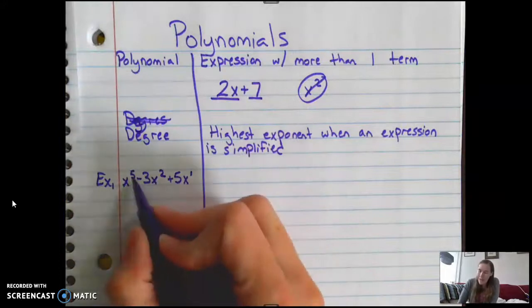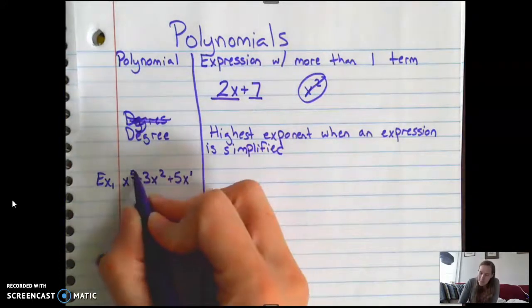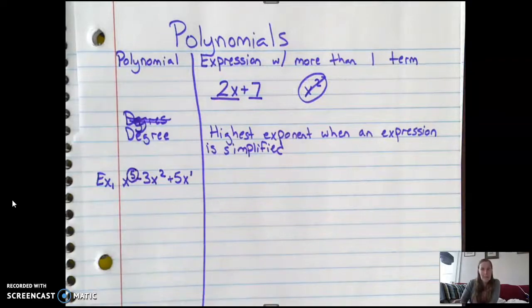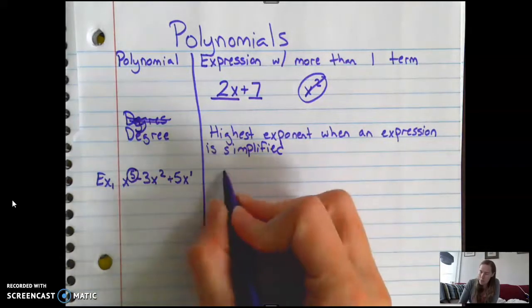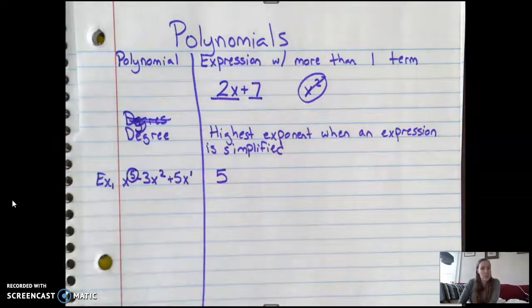So out of 5, 2, and 1, this 5 is the highest exponent. Therefore, it is a degree 5 polynomial.